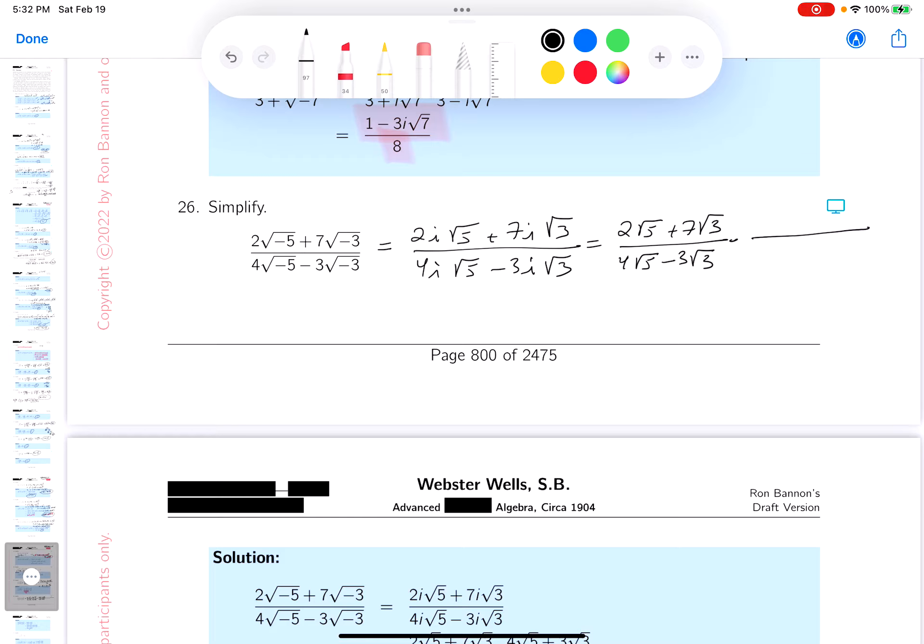I'm going to multiply top and bottom by the bottom's conjugate. 4 root 5 plus 3 root 3. 4 root 5 plus 3 root 3. Okay, what do you get there? Let's do the bottom. The bottom's fairly easy to do. It's 16 times 5, which is 80. And then it's going to be minus 9 times 3, which is 27. I'll do that later.